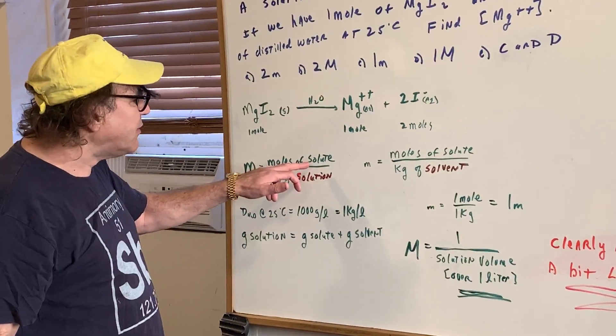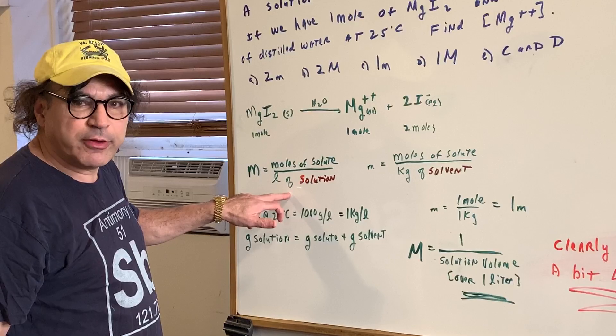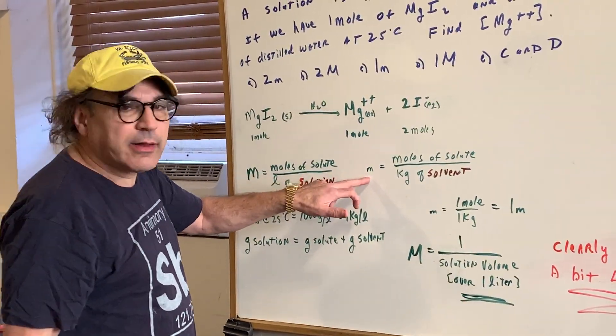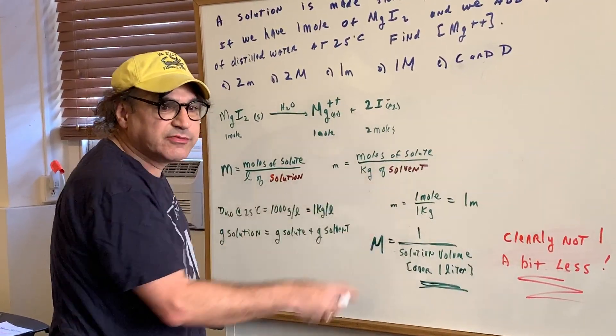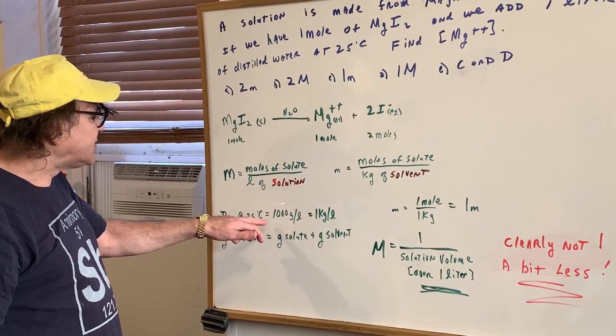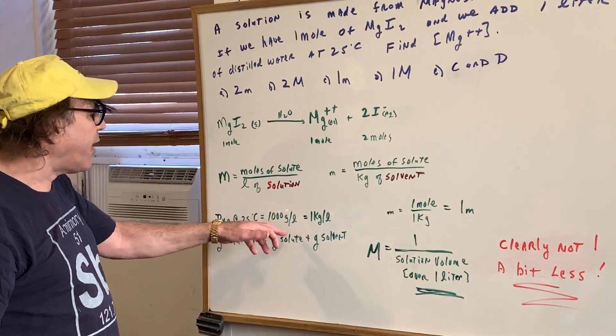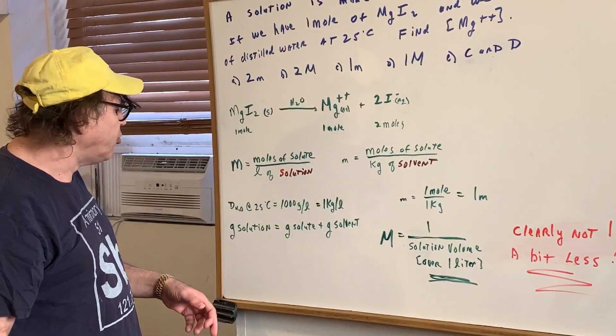Molarity is the moles of solute over liters of solution. Little m, molality, is moles of solute over kilograms of solvent. Now at 25 Celsius the density of water is a thousand grams per liter, which you should know, which is one kilogram in a liter of solution.